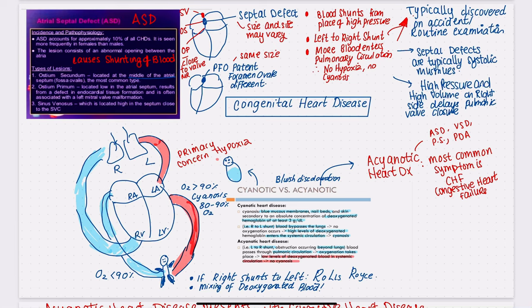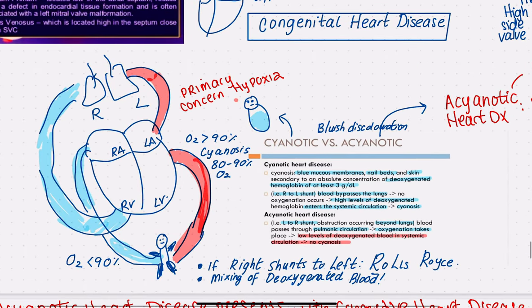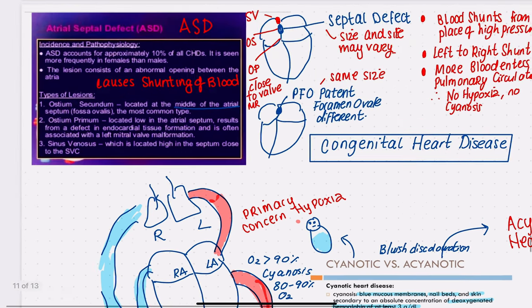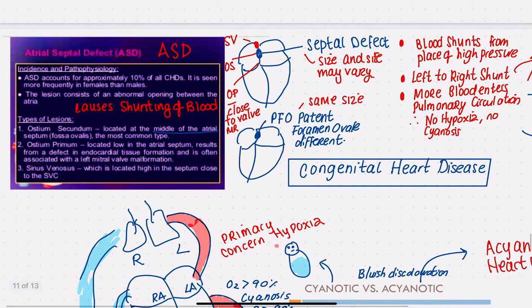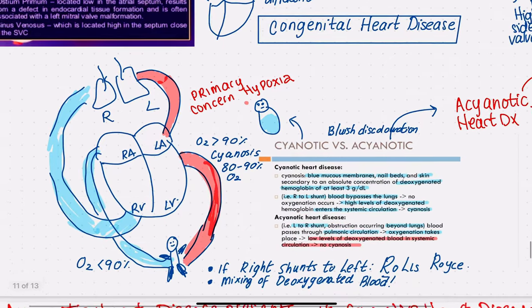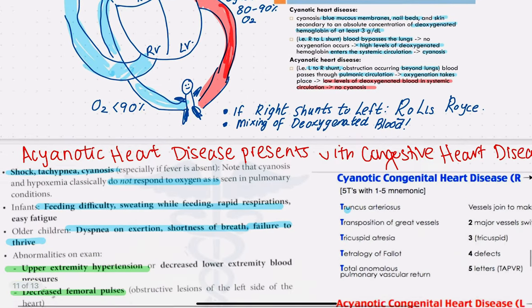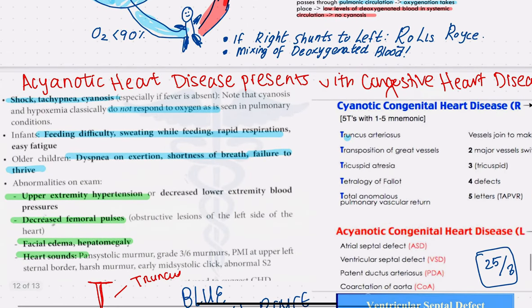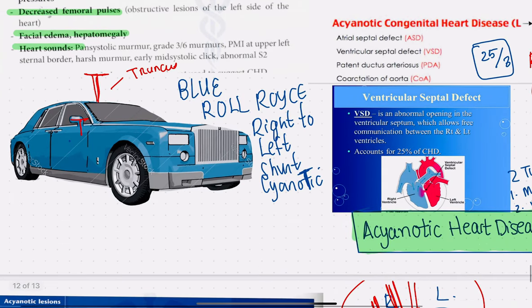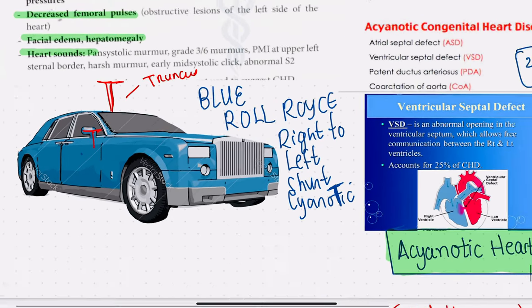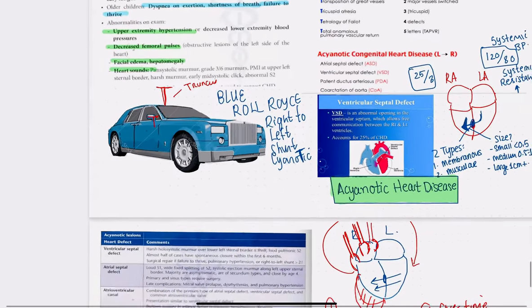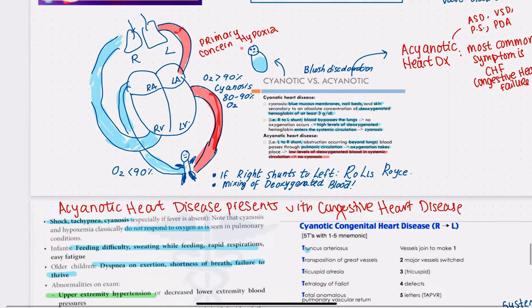Hello and welcome to this video on congenital heart diseases. First we're going to look at an overview of cyanotic versus acyanotic congenital heart diseases. Then we're going to talk in detail about what happens in an atrial septal defect and a ventricular septal defect, the symptoms of acyanotic heart disease, and a little cartoon to help you remember the differences between the two.